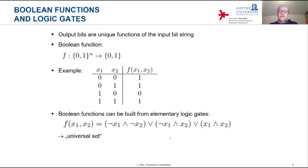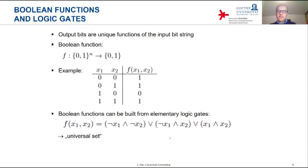One says that these logical operations constitute a universal set, meaning that any Boolean function can be built from these logical operations only. This further implies that every deterministic classical machine can be built from these logical operations only. Each individual logical operation involves only one or two bits at a time — the logical AND and logical OR involve two bits, and the logical negation just a single bit.